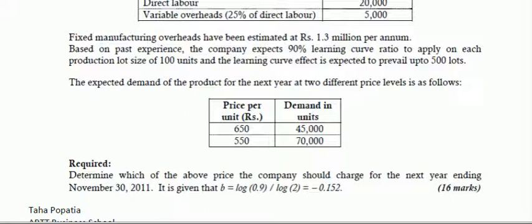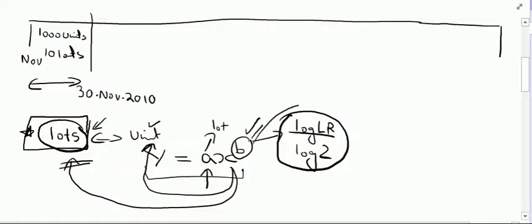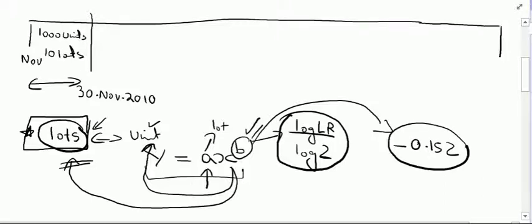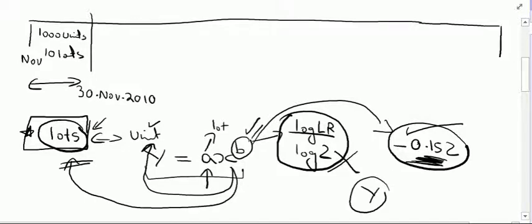In this question, looking at the last line of the requirements, it is given that B = log(0.9) / log(2) = negative 0.152. If you are provided with B's value in an exam, you must use this value in your computations and not calculate it yourself. The examiner wants to see consistent answers across all examination sheets, so please use this specific value. Y calculated from the formula gives the average cumulative time.